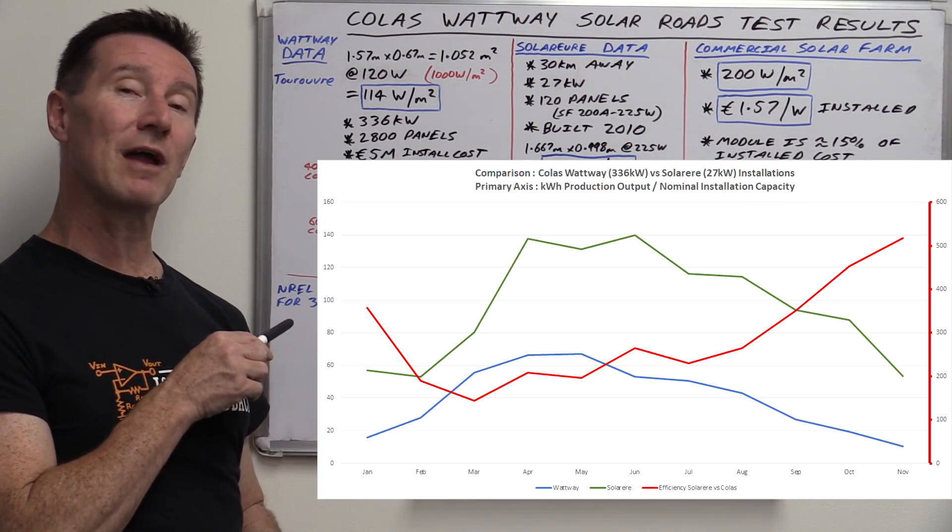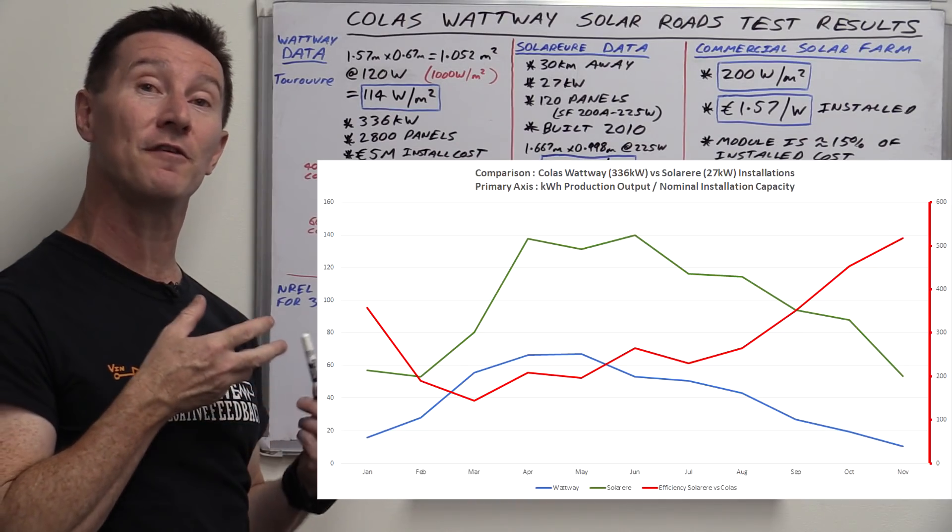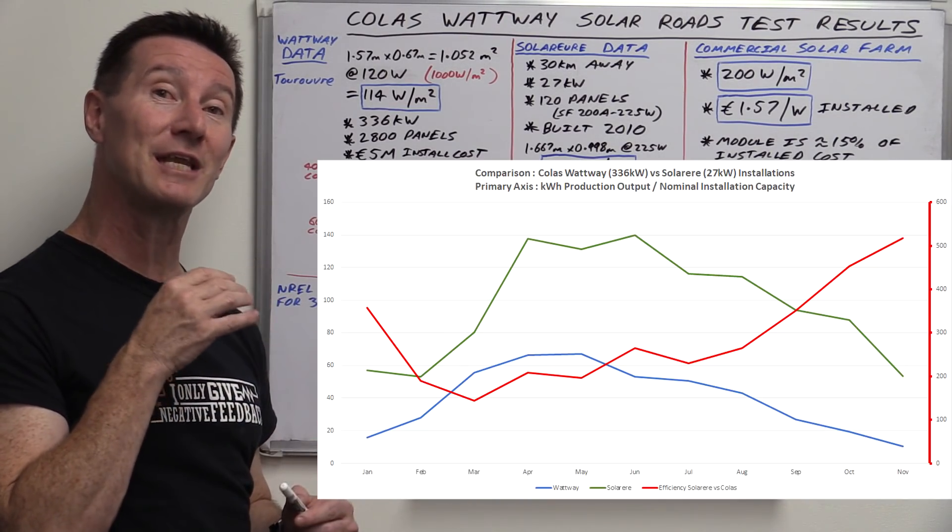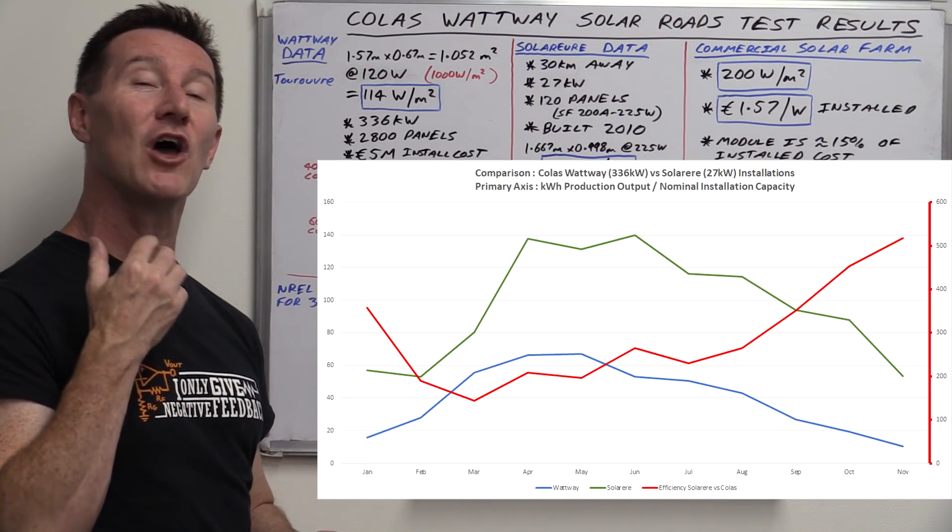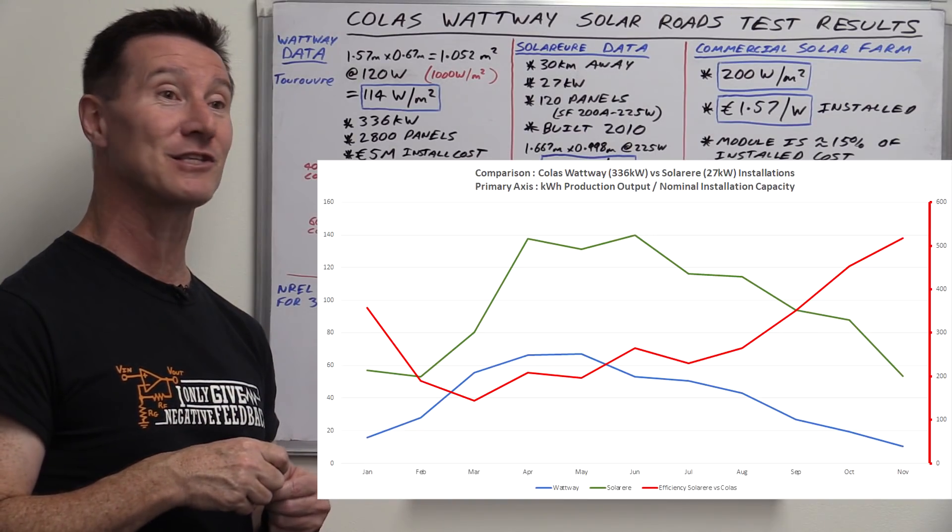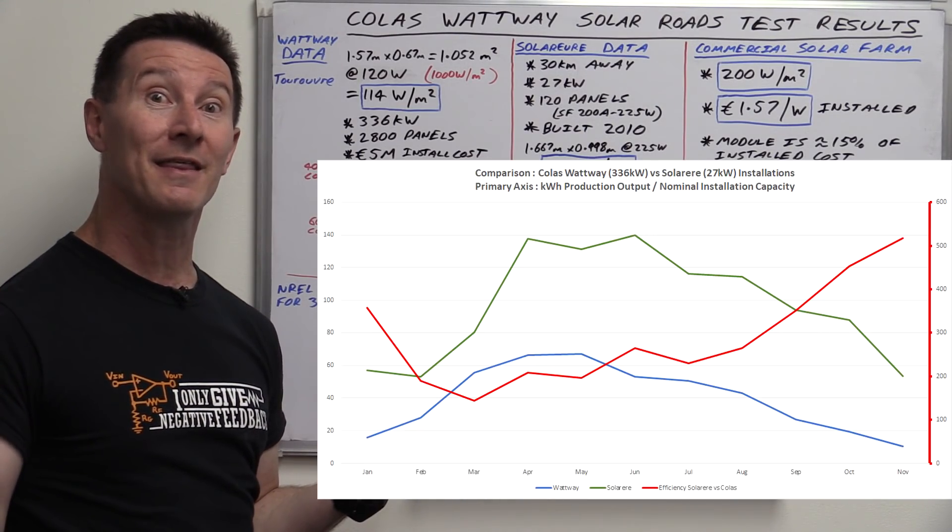But the interesting part of this graph is actually the one on the right-hand y-axis, which is actually the efficiency compared between the two. And you can see it ranges anywhere from about 150% to over 500% more efficient, depending upon the month. That's like five times. Like, what do you say to that?